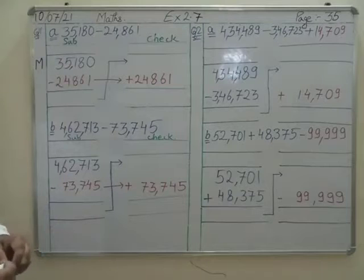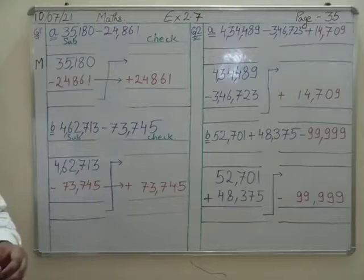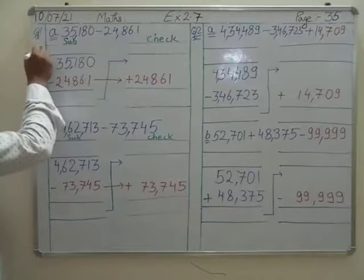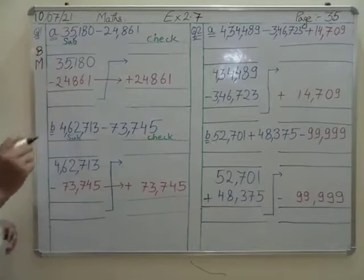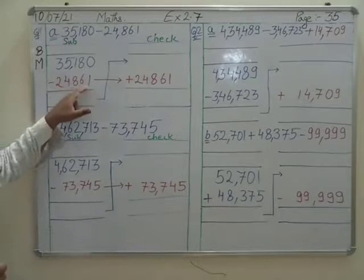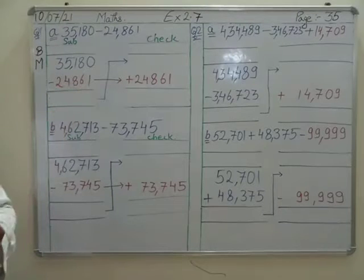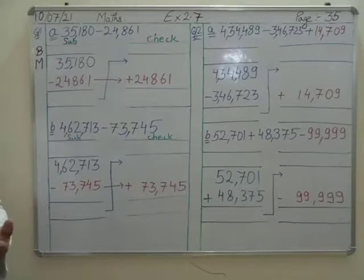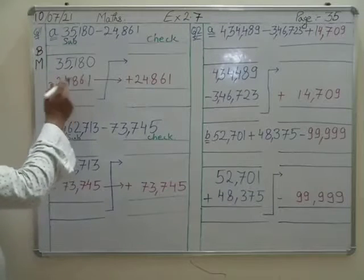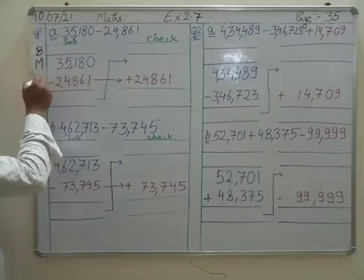Very good, Revaab. Your answer is totally fine. We leave a line for borrow. Now tell me what is the subtrahend. 24,861 is the subtrahend. And the result is the difference.